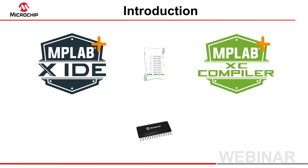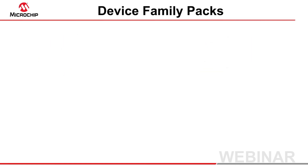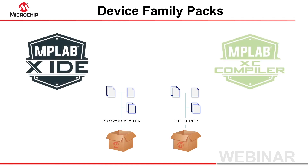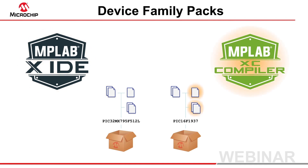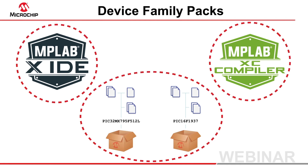Microchip has updated its tools so that device support is now handled by device family packs, or DFPs, and this change offers several advantages. Device family packs are a way of packaging and distributing device support files and are used in the latest MPLAB X IDE and XC compilers. These tools now have the ability to read these files on a device-by-device basis and from arbitrary locations. The use of DFPs segregates the tool and its support for devices, so that both can be updated independently and in a more timely manner.